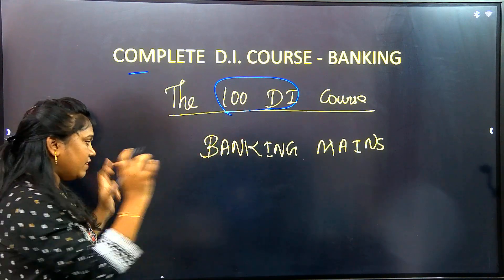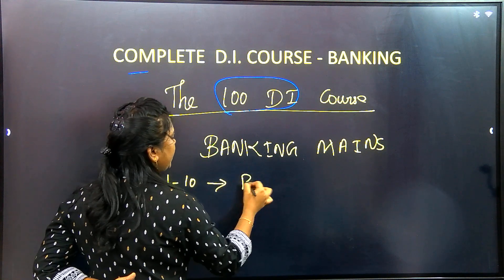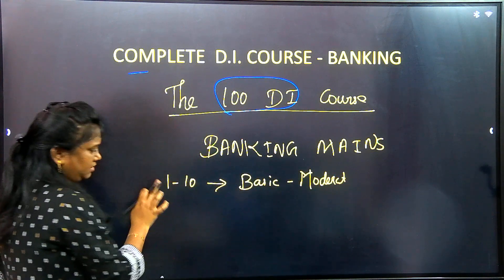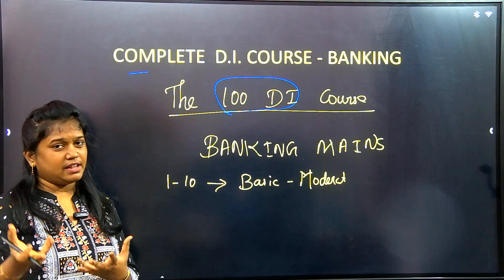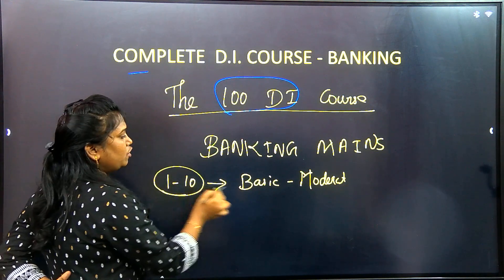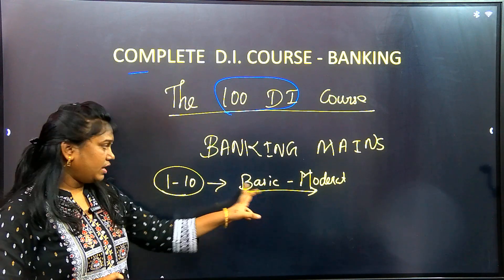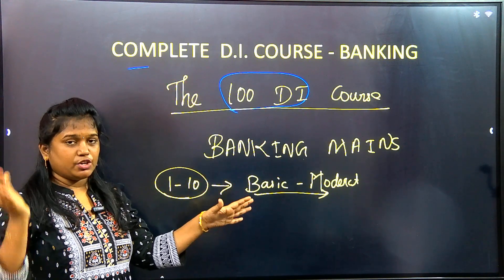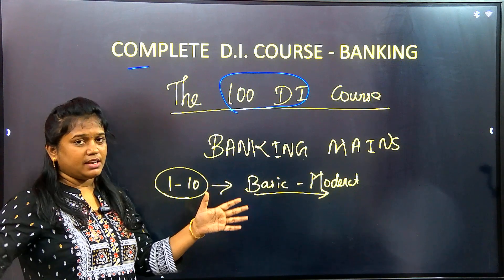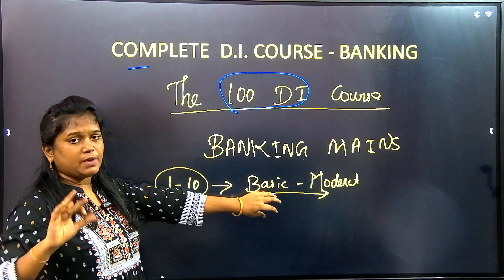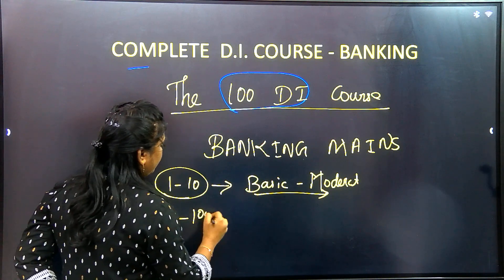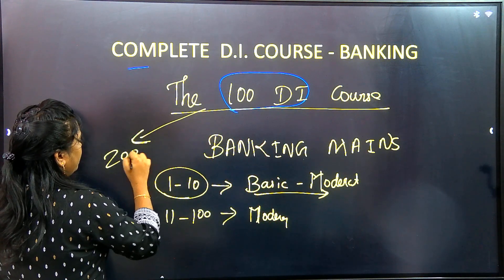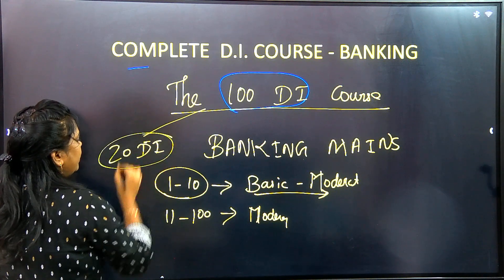We launched one course. From September 1st, there will be 1 to 10 videos covering basic to moderate level. If you want to learn high level, videos 11 to 100 will cover that. In 100 videos, you will cover basic to moderate level. This is a separate course launched separately at an affordable price. Details will be available from September 1st. For the first 10 videos, the level is basic to moderate. For videos 11 to 100, the level is high. We will launch it in batches of 20 DIs.